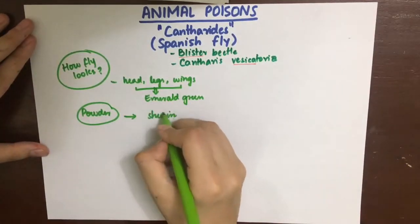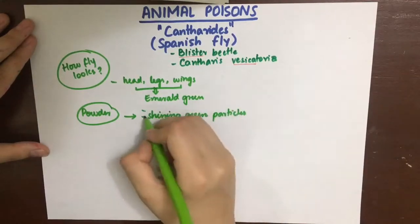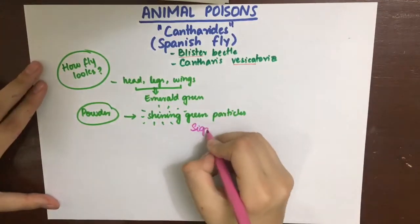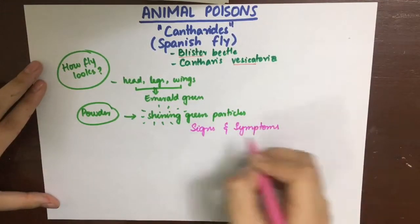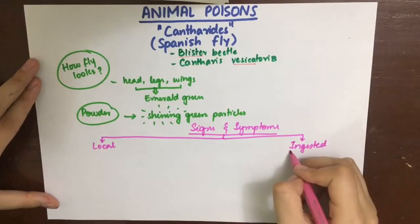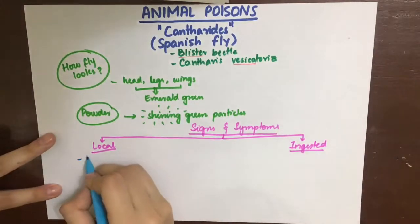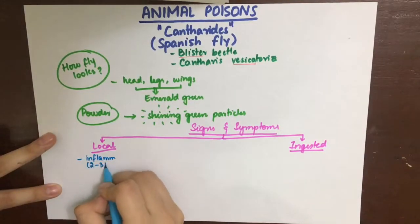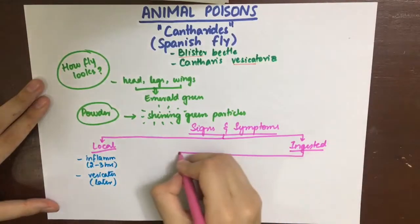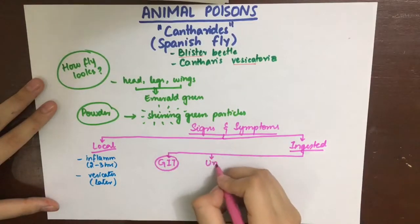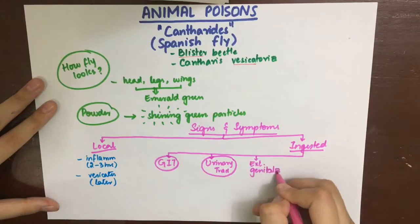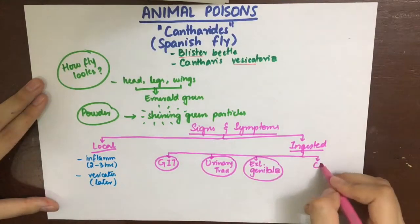Quite contrary to its beautiful appearance, it causes severe signs and symptoms when used as a poison. The signs and symptoms depend on the mode of administration — whether administered locally or ingested. On local administration it will cause inflammation and vesication. If ingested, it will cause severe symptoms on the GI tract, urinary tract, external genitalia in both males and females, and in the CNS.